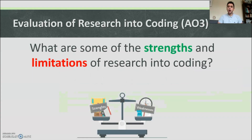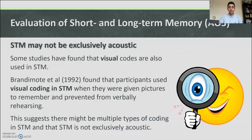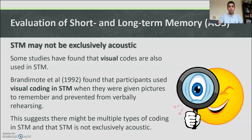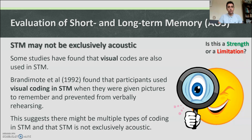Let's evaluate. What are the strengths and limitations of research into coding? One limitation: short-term memory may not be exclusively acoustic. Some studies have found that visual codes are also used in short-term memory. Brandymo et al. in 1992 found that participants used visual codes in short-term memory when given pictures to remember and prevented from verbally rehearsing. This suggests there might be multiple types of coding in short-term memory — not just acoustic but also visual. This is a limitation.